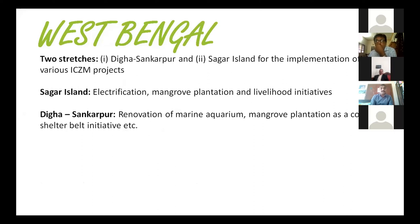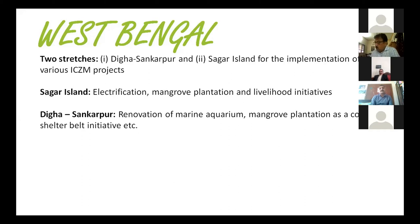The third state in phase one ICZMP was West Bengal, covered in two stretches: the Digha-Shankarpur coast and Sagar Island. A major intervention was electrification of Sagar Island, which had previously relied on diesel generators. Electrification enabled livelihood enhancement in education and agriculture. In the Digha-Shankarpur coast, a marine aquarium was updated for ecotourism, mangrove plantation took place, and shelterbelt plantation shifted from casuarina monoculture to include mangroves — what we call green coastal infrastructure.